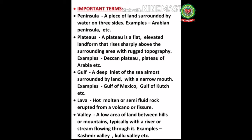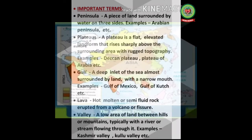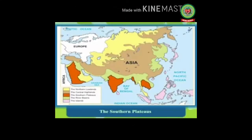The southern plateaus lie to the south of the central highlands and cover a large area of south Asia. They are made up of old hard crystalline rocks and are the oldest landforms on the earth. These plateaus are also called dissected and rugged landforms, and they are quite large in size.